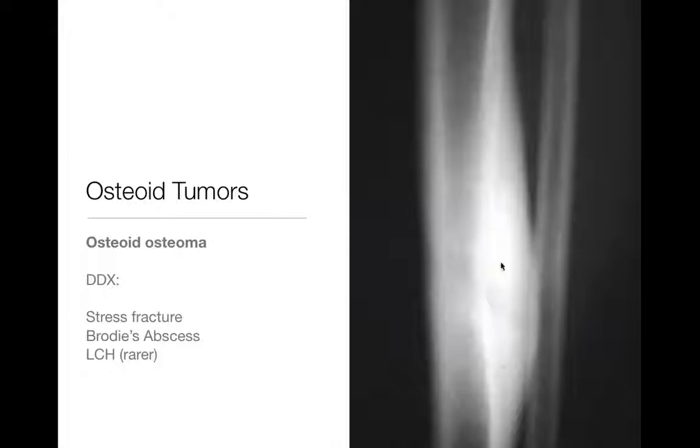Obviously, if you see a lytic fracture line across, you can just throw the other diagnoses out and you're done — it's a fracture. Langerhans cell histiocytosis can occasionally look like this, but it's much less common, so that's another thing to consider. But really, when you see this kind of heaped-up solid non-aggressive periosteal reaction, you're stuck with a differential of Brody's abscess, osteoid osteoma, or stress fracture.